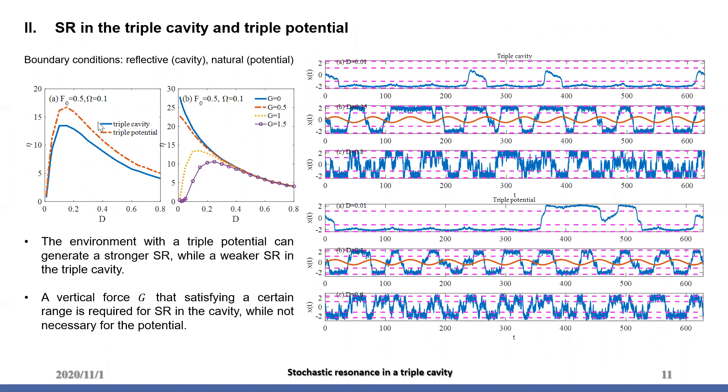Figure A shows that the maximum of eta in the triple potential is larger than in the cavity, which can be explained by the jumps in a single trajectory. As we can see, for the moderate d, jumps between wells in a potential is more regular than the jumps between units in a cavity.